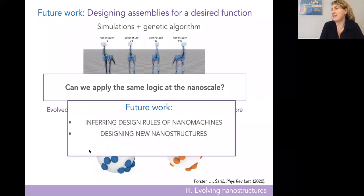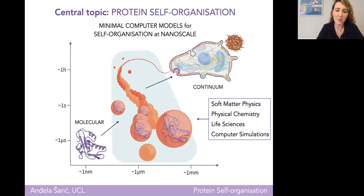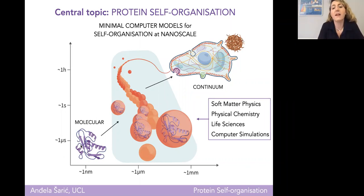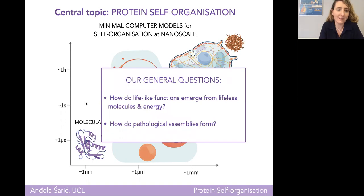This agnostic approach of starting with a random design and asking an algorithm to find one that works can be useful in helping you navigate the phase space at the nanoscale. Currently, I want to start with a random design of a nanomachine and ask the algorithm to evolve one that will split a cell, do cargo transfer, or have whatever structure I might want. I hope I've given you a flavor of how these types of minimal models — mesoscopic, from soft matter and physical chemistry — can be useful in bridging molecular and cellular scales. These are simple but not cartoons; they preserve the correct physics. In the future, we are using them to study cell reshaping throughout evolution, evolve nanomachines of desired function, and study inhibition of pathological structures in amyloid aggregation — all in the quest to answer how dead molecules make us alive and how this can go wrong.